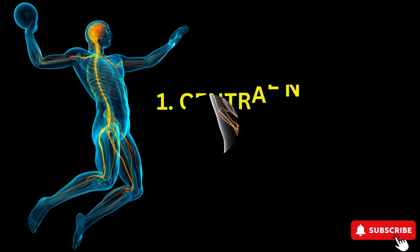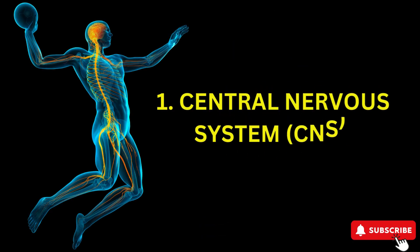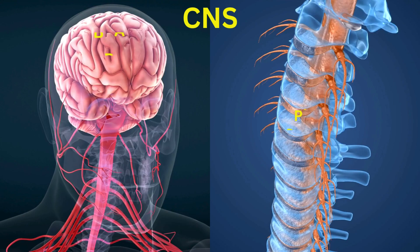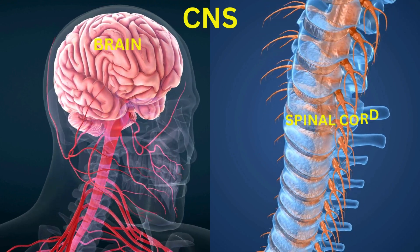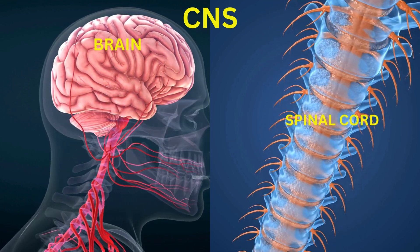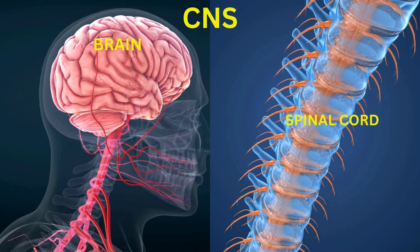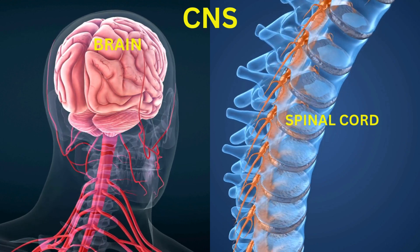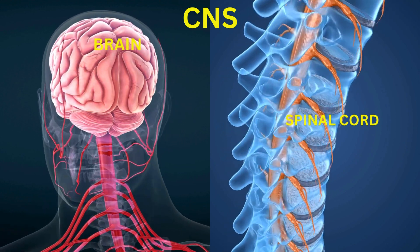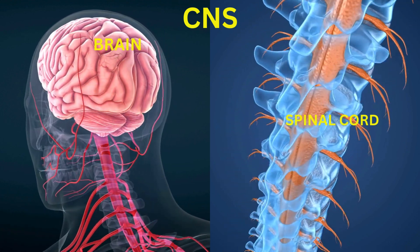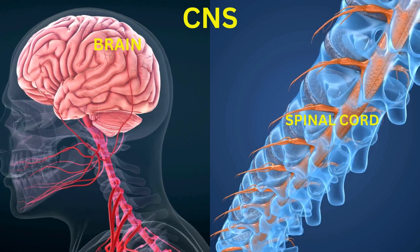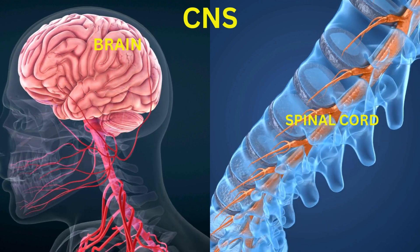Central Nervous System (CNS): The CNS consists of the brain and spinal cord. The brain is the control center of the nervous system and is responsible for processing information, coordinating actions, and controlling various bodily functions.